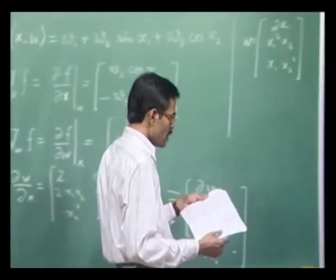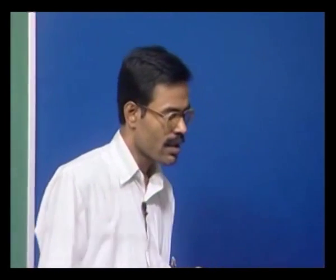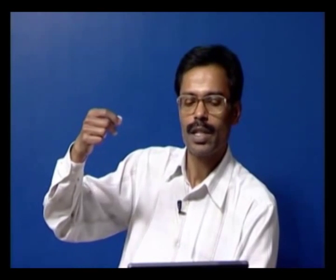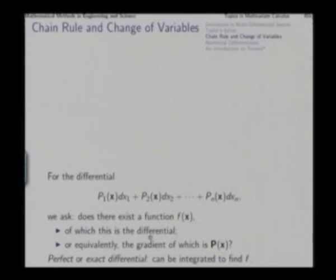If we have a differential quantity and ask whether there exists a function f(x) such that df equals that quantity — equivalently, for which the gradient is the vector function p(x) with components p1(x), p2(x) — if the answer is yes, we say that this differential is a perfect differential or an exact differential. It can then be integrated to find f. For every differential, this may not be valid.